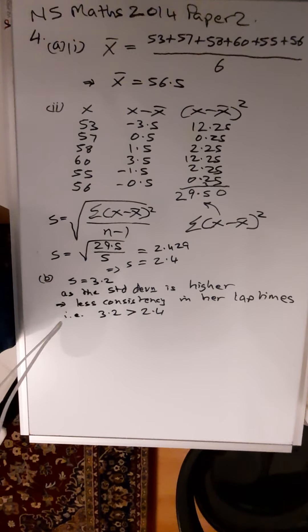In our lap times. And you have to actually write down those results, use those results: i.e., 3.2 is greater than 2.4. That would get you the one mark.